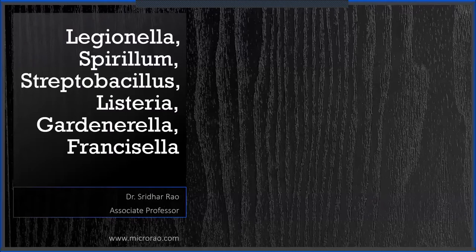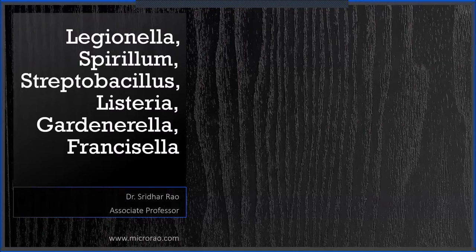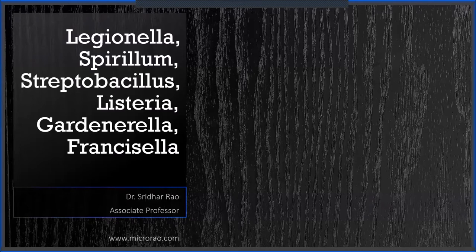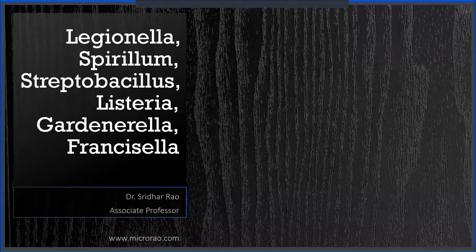Listeria is important because of two types of diseases. One is a foodborne illness manifesting as gastroenteritis, and the second is a more severe disease manifesting as bacteremia, septicemia, or meningitis, especially in neonates, pregnant women, and immunocompromised individuals. The question may be asked as Listeriosis. There is also a gram-variable bacterium responsible for bacterial vaginosis. Lastly, I'll speak on Francisella tularensis, which causes tularemia — not seen in India but seen in western countries. It is a highly pathogenic bacterium, as dangerous as plague, and is a bioterrorism agent.